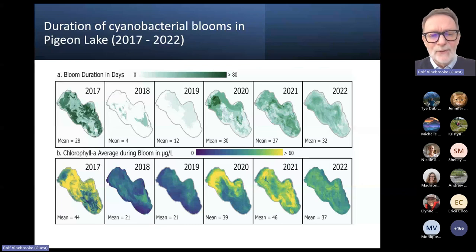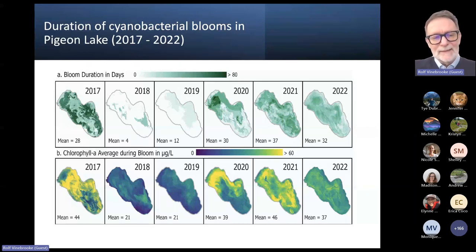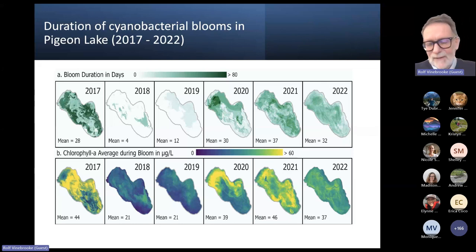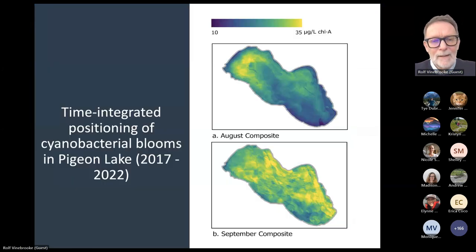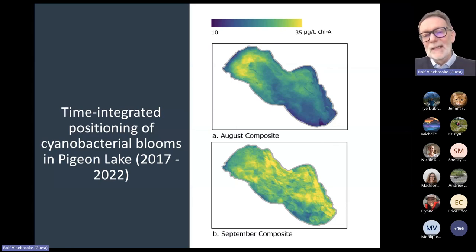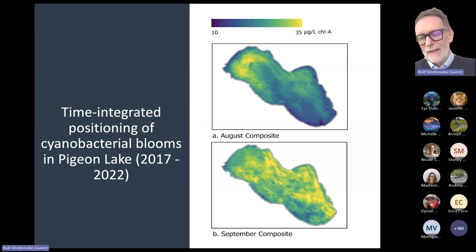Here you can also see how long the blooms actually exist within Pigeon Lake — again from 2017 to 2022, no real clear pattern. There's lots of spatial variation but no consistent trend over time. An interesting thing is that if you put all that data from the last several years together and produce a composite, the cyanobacteria blooms earlier in the summer at the beginning of August seem to concentrate more along the northwestern basin, before spreading out by way of wind and wave action throughout the rest of the lake by the start of fall.